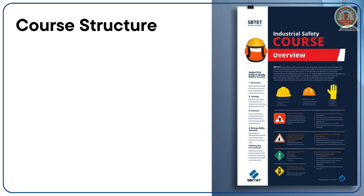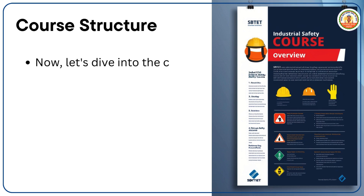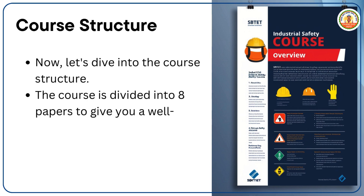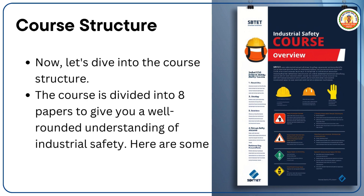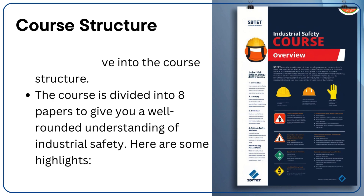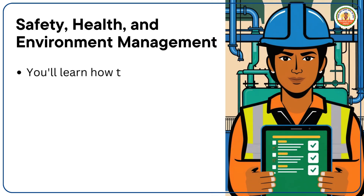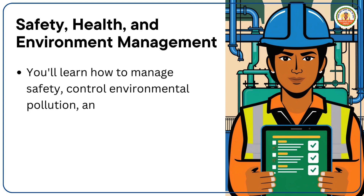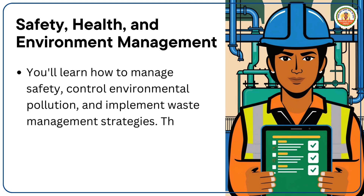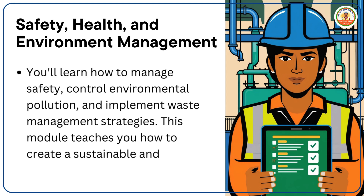Now let's dive into the course structure. The course is divided into eight papers to give you a well-rounded understanding of industrial safety. You'll learn how to manage safety, health, and environment — including controlling environmental pollution and implementing waste management strategies. This module teaches you how to create a sustainable and safe workplace.